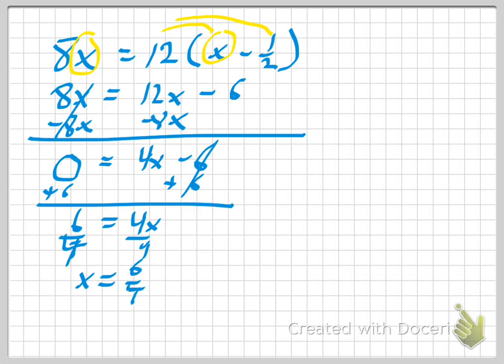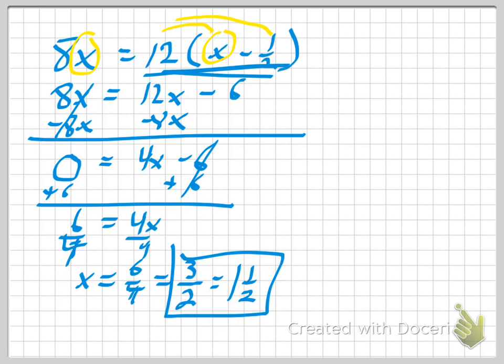Now, I want to show you how I reduce this. 6 fourths reduces to 3 over 2, and that reduces to 1 and a half. I'm okay with either of these answers. It turns out that leaving it as 3 halves makes it a little easier to check. If I put 3 halves in for x, 8 times 3 halves, the 8 and the 2 will cancel out. You'll get 4 times 3, you'll get 12. And if I put 1 and a half in to the right side, if I take 1 and a half minus a half, it's just going to be 1. And what's 12 times 1? 12. So I didn't write the check on this one, but it did check.